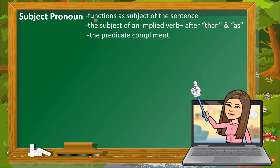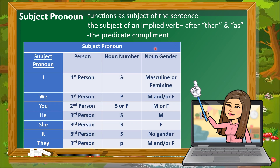Subject pronouns function as the subject of a sentence, the subject of an implied verb after 'than,' and as the predicate complement. To pick the correct subject pronoun, it is important to consider three things: person, noun number, and noun gender. The subject pronouns are: I, we, you, he, she, it, and they.